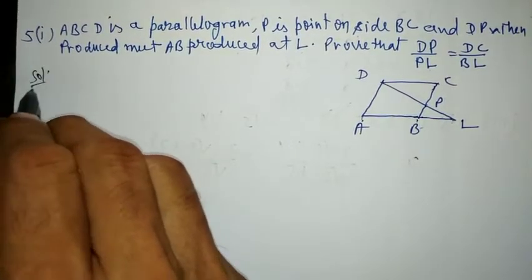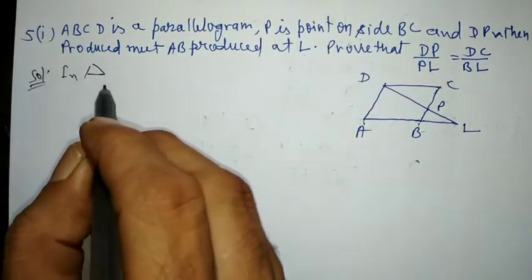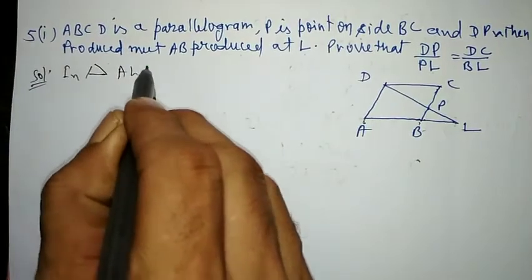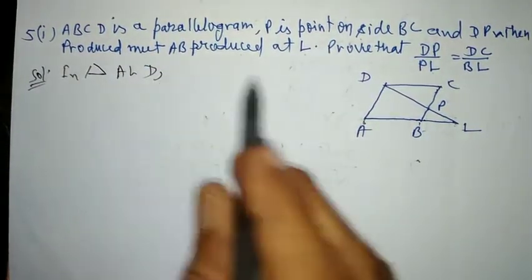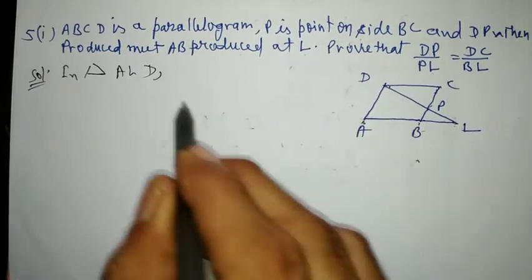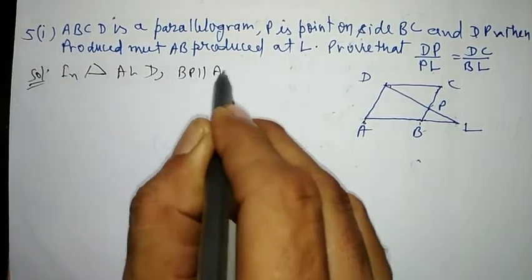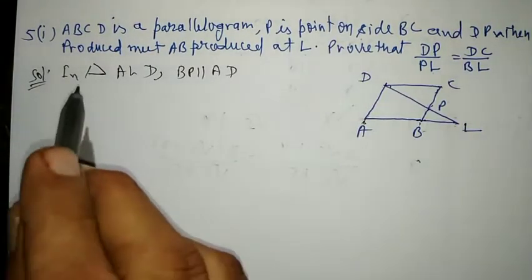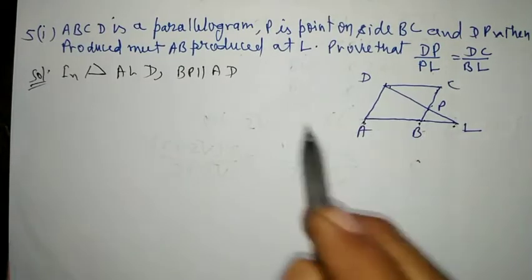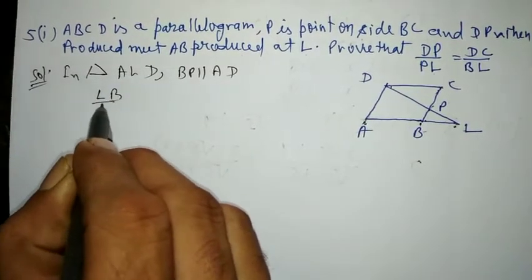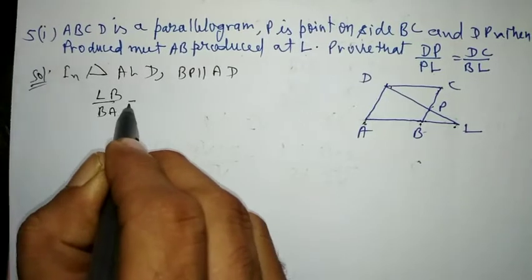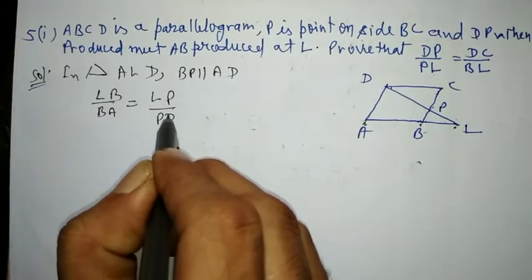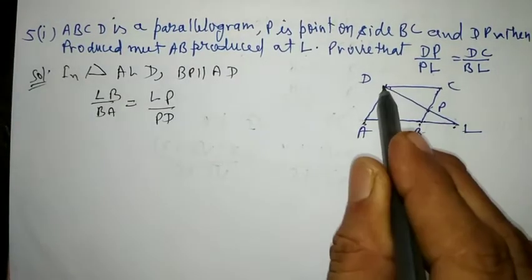In triangle ALD, BP is parallel to AD. Due to Thales' theorem, LB upon BA is equal to LP upon PD.